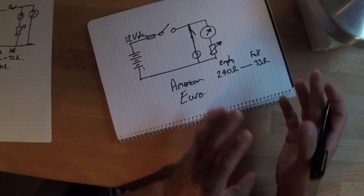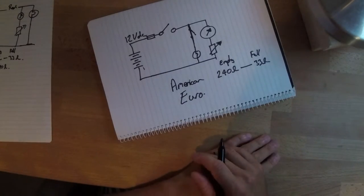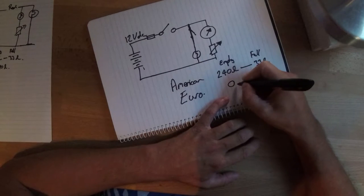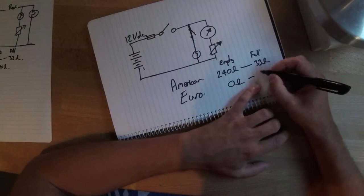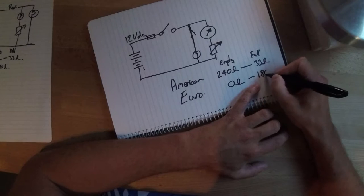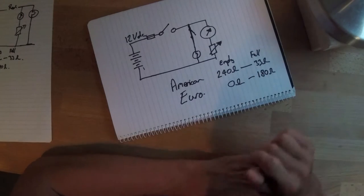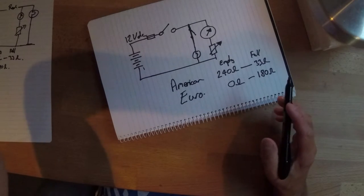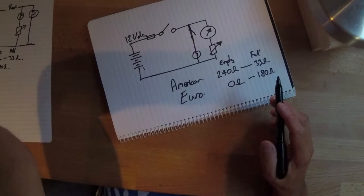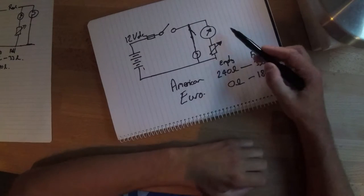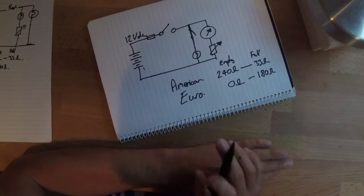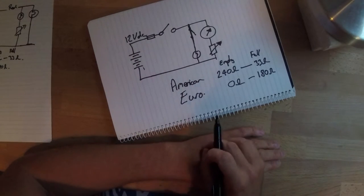The European version works in the opposite to that. That being zero ohms at empty and 180 ohms at full. So the net effect of that is basically the gauge works in reverse if you have the wrong sender unit. Really important.